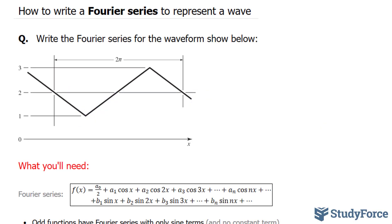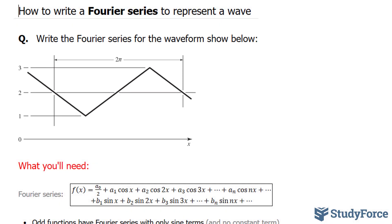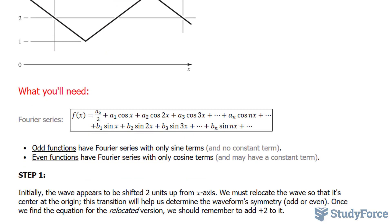In this lesson, I'll show you how to write a Fourier series to represent a wave. The question reads: write the Fourier series for the waveform shown below. The waveform has a period of 2π. What you'll need to be successful here is knowing the general formula for a Fourier series, and that odd functions have Fourier series with only sine terms and no constant.